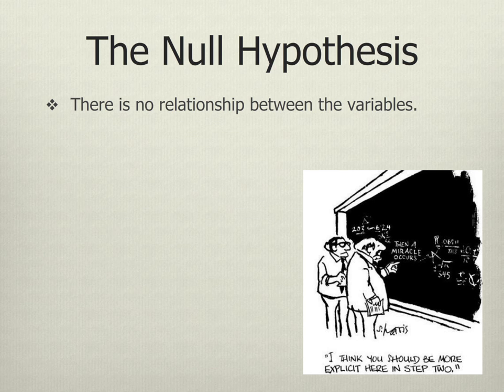The null hypothesis is that there is no relationship between the variables. The easiest way to construct a null hypothesis is to put that phrase before the two variables that you have in your hypothesis, with the word 'and' in between them.